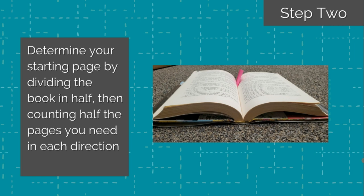You then count that number of pages, so 108 for me, in each direction from the middle to give you the middle section of the book. When you count these pages, count each piece of paper as one page, not the page numbering.